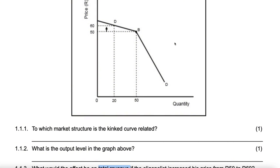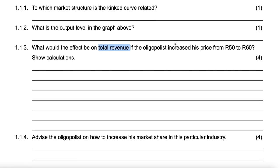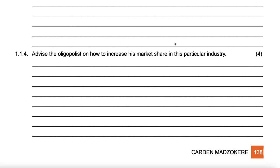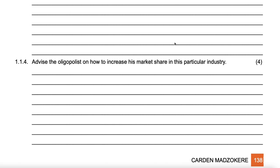Total revenue would decrease from 2,500 to 1,200, meaning it decreases by 1,300 rand. Your calculation is just as shown.